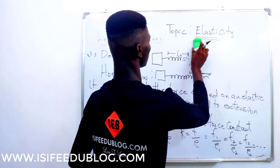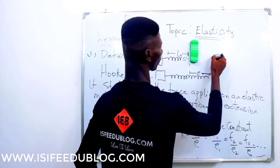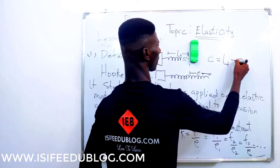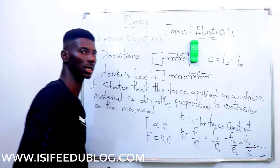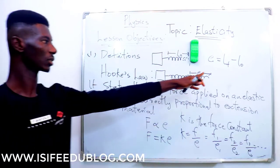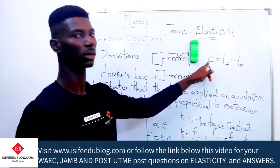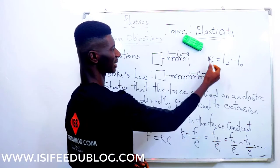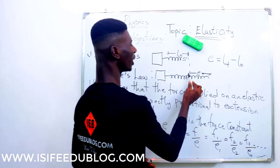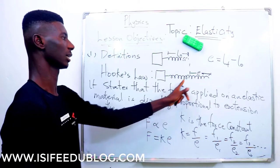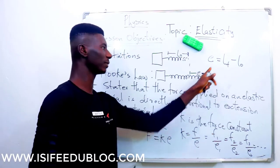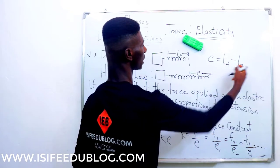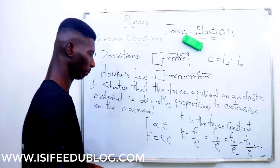It is important to note that extension is given by the final length minus the original length. This sometimes confuses students. Extension does not mean the original length. As we can see from the diagram, extension only occurs when you apply a force — that extra length given is what you call extension. Please note: extension equals final length minus the original length.